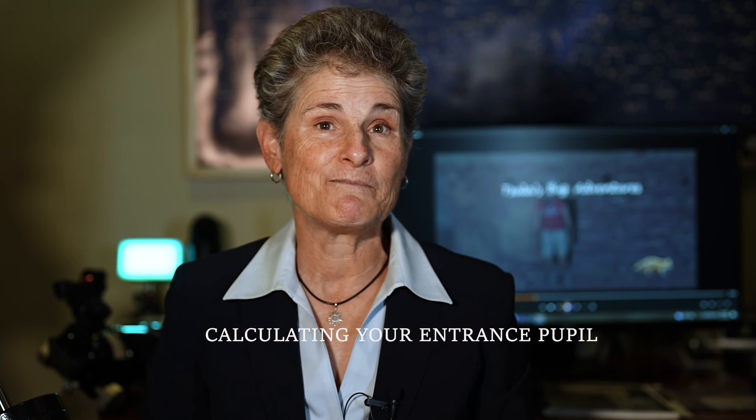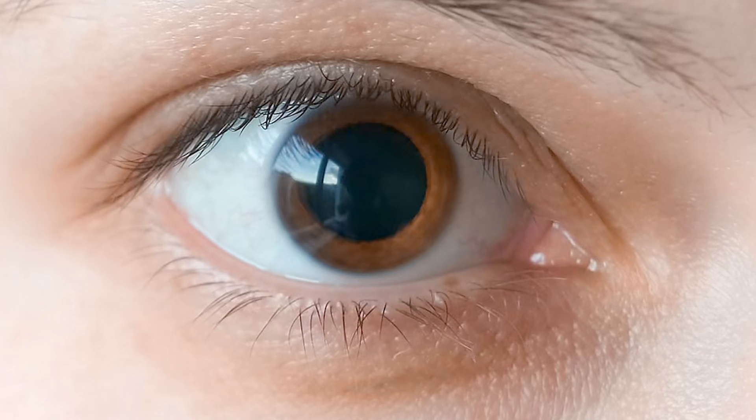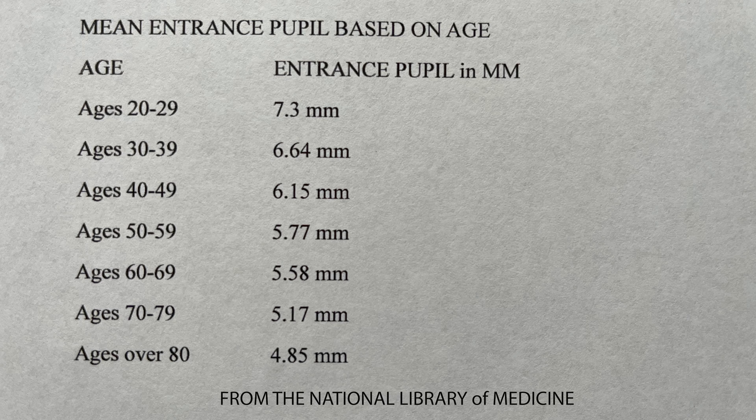To know that, you need to know your own eye's entrance pupil. In bright light, the pupil of the human eye will contract to around 2 to 4mm. But when we go outside at night, the pupil increases to its maximum size to gather as much light as possible. The size of the dark adaptive pupil decreases as we age. As a general rule, young people have larger dark adaptive pupils of 7, maybe 8mm. In a test of 263 people by the National Library of Medicine, the mean dark adaptive pupil diameter of those aged 20 to 29 was 7.3mm.